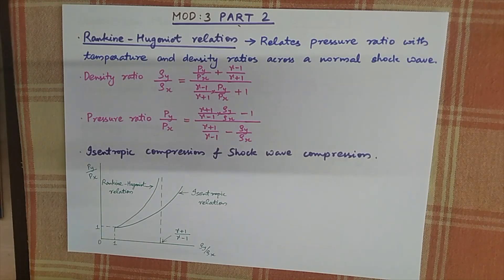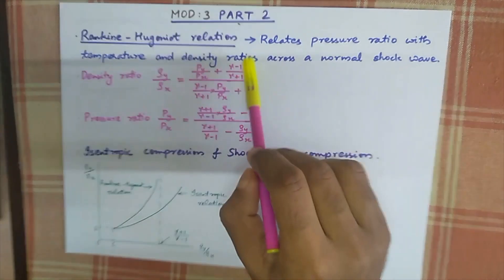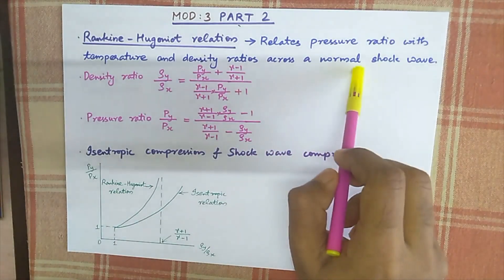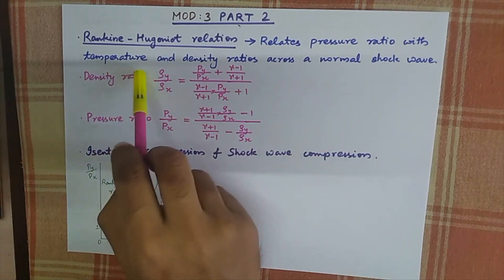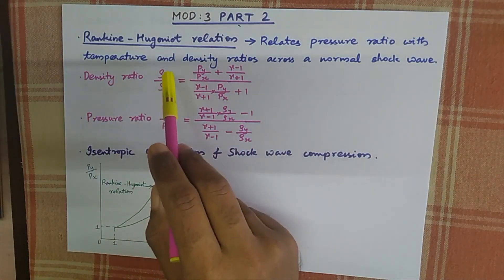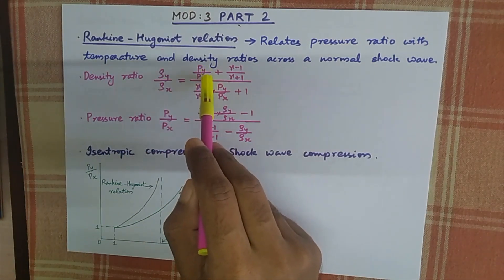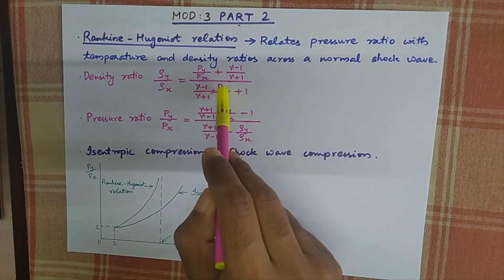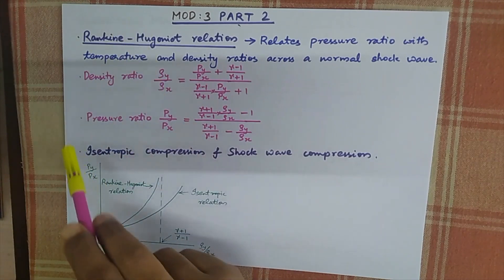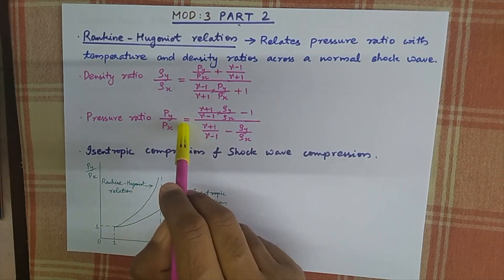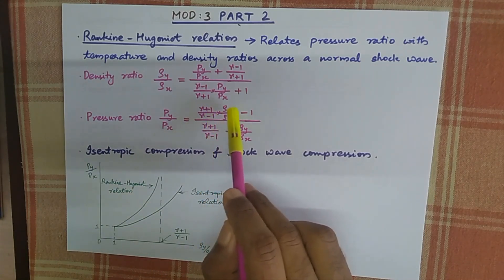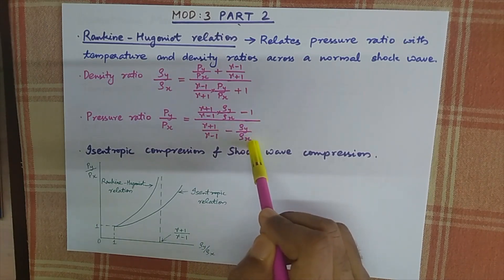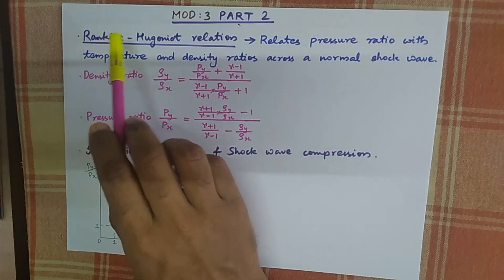In this video, we will be discussing firstly about the Rankine-Hugoniot relation. It is a relation which relates pressure ratio with temperature and density ratios across a normal shock wave. The two forms are: density ratio rho_y/rho_x = (P_y/P_x + (gamma-1)/(gamma+1)) / ((gamma-1)/(gamma+1) * P_y/P_x + 1), and pressure ratio P_y/P_x = ((gamma+1)/(gamma-1) * rho_y/rho_x - 1) / ((gamma+1)/(gamma-1) - rho_y/rho_x). These two are the Rankine-Hugoniot relations.